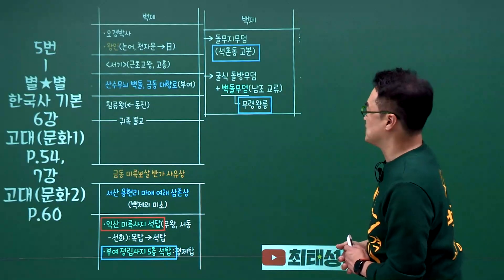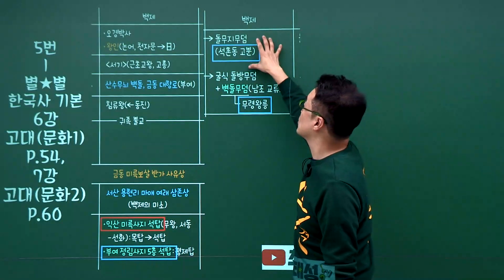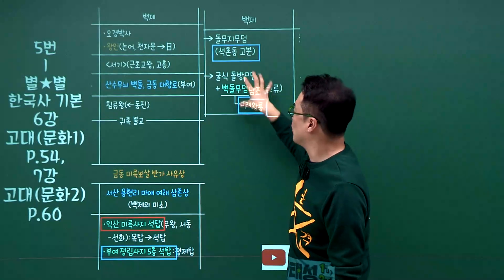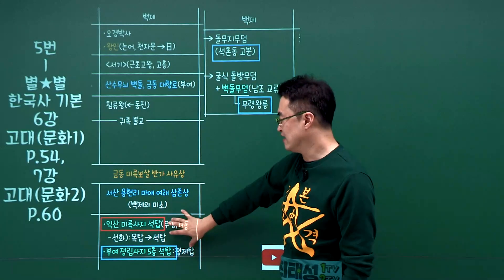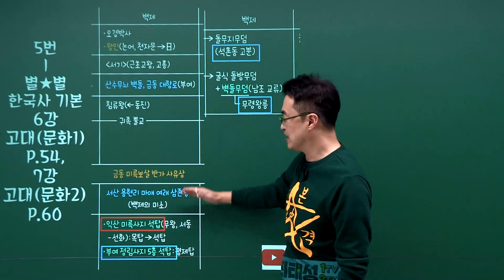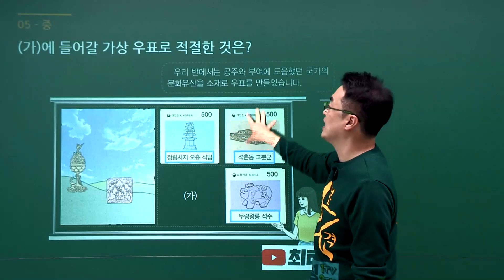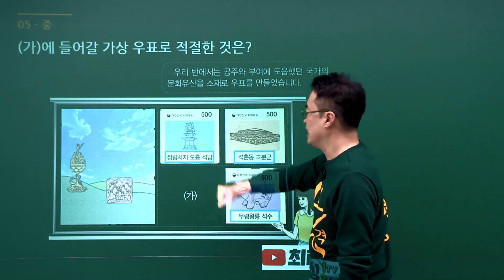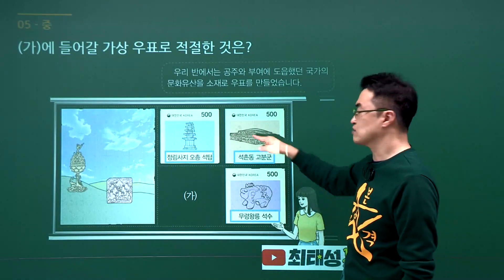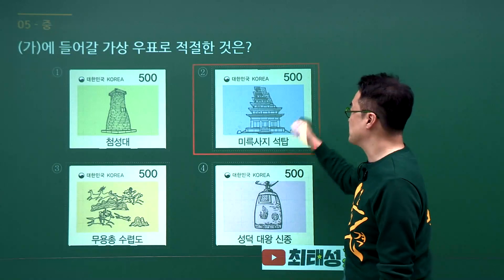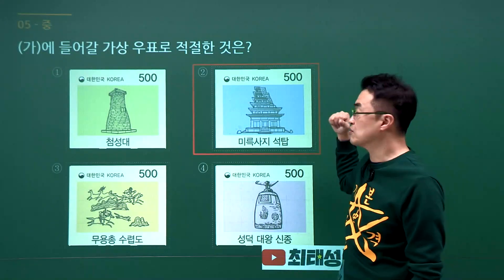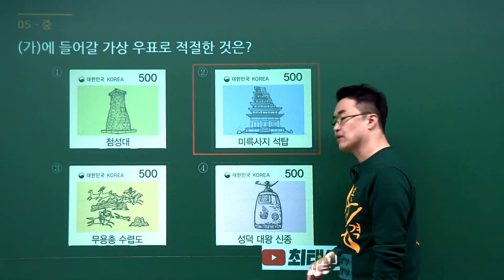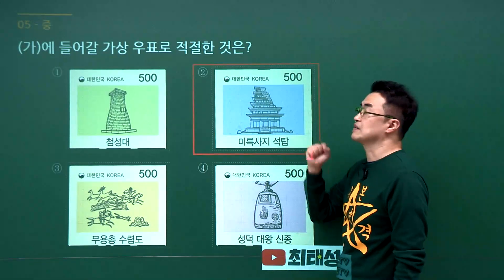백제의 문화유산 문제입니다. 석촌동 고분, 무령왕릉, 부여 정림사지 5층 석탑 등을 보여주고 또 다른 백제 문화유산을 고르는 문제입니다. 공주와 부여에 도읍했던 국가가 백제이고, 백제 문화유산으로 정림사지 5층 석탑, 석촌동 고분군, 무령왕릉 석수를 배웠습니다. 미륵사지 석탑이 정답으로 2번입니다. 첨성대는 신라, 무용총은 고구려, 성덕대왕 신종은 통일신라입니다. 정답은 2번입니다.